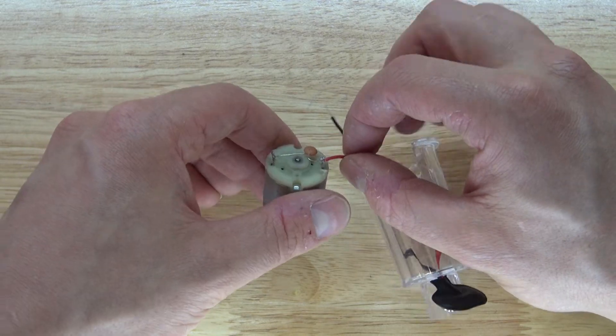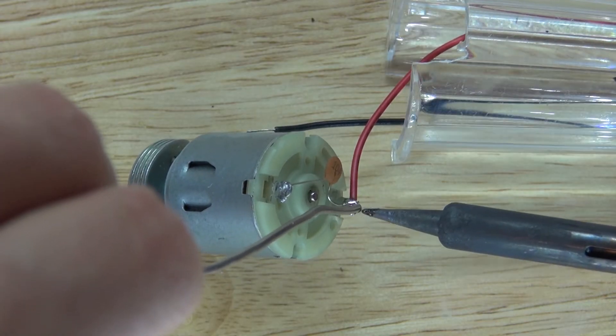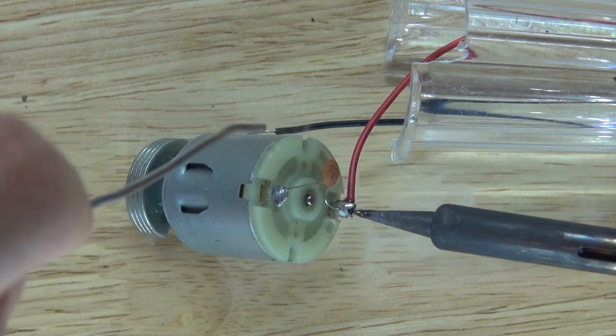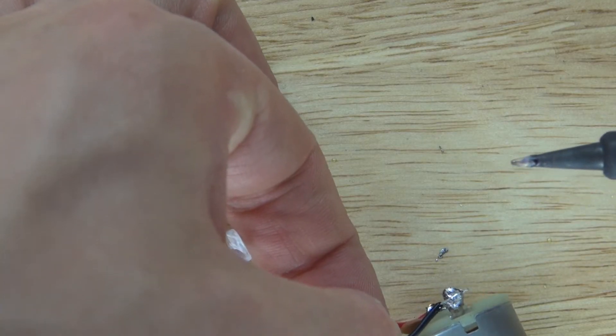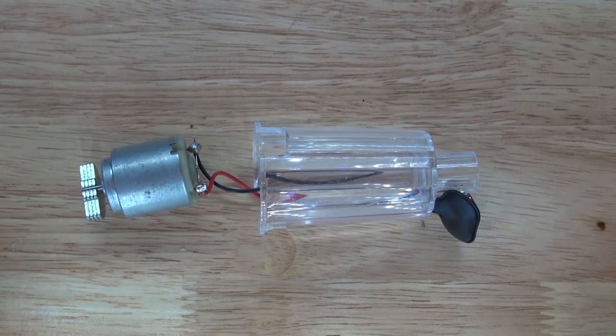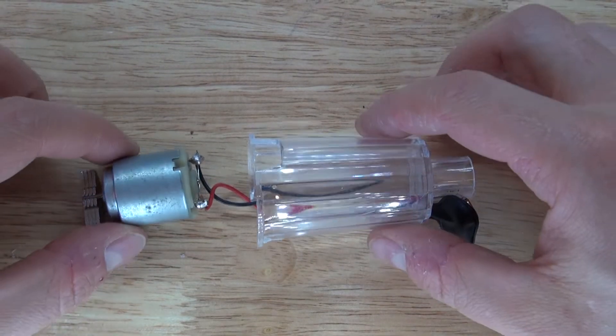And now what I want to do is take the connection of those wires and solder them into place. There we go, both soldered, and it should look just like this. Polarity doesn't matter for a DC motor.